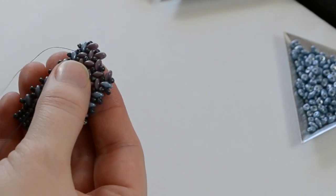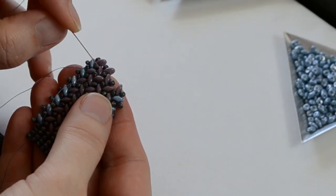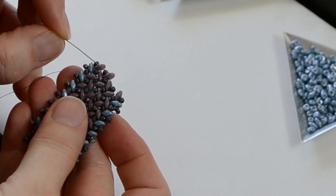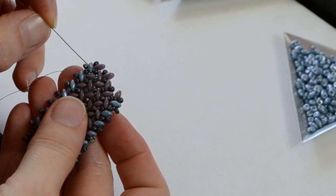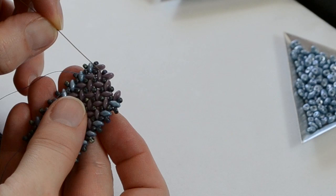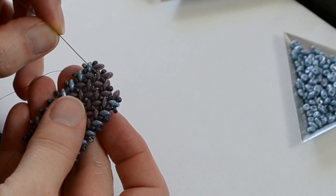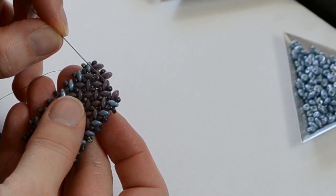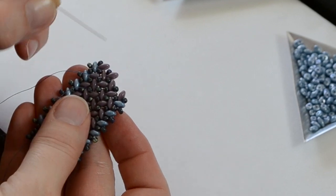We want our thread to exit in the same spot that it would have been exiting previously. We took this stitch down through this bead and up through this SuperDuo, so we want our thread to be exiting this SuperDuo.